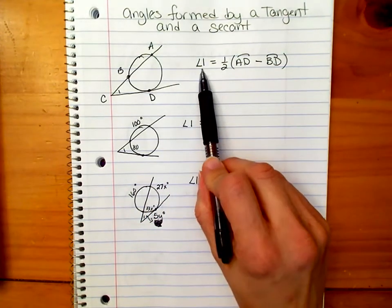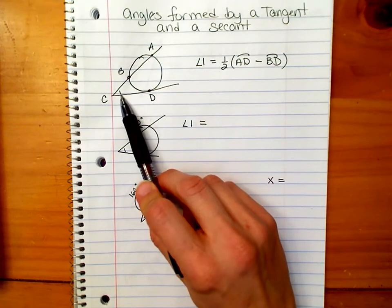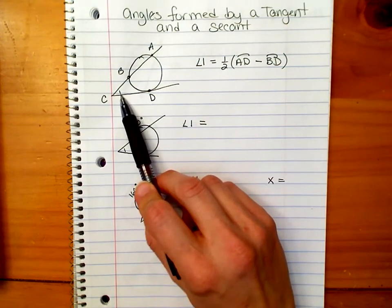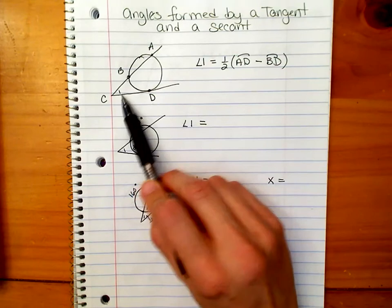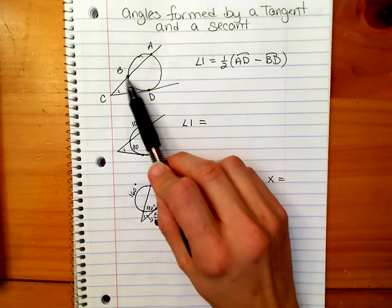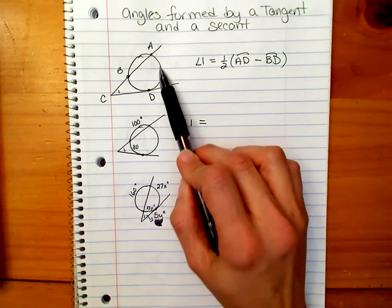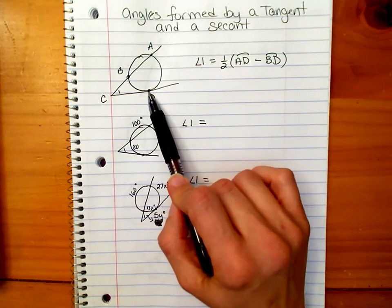So the formula is angle 1, this angle that's formed by the tangent and the secant, is equal to the difference of this arc minus this arc. So you take the bigger arc minus the smaller arc.